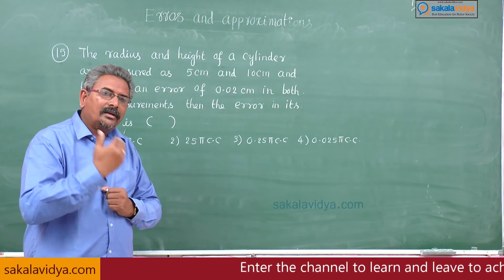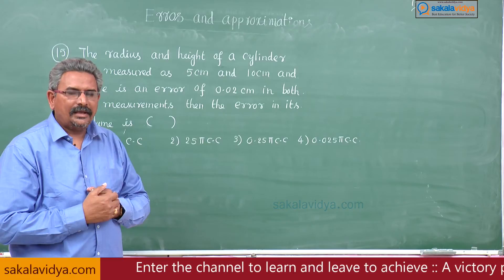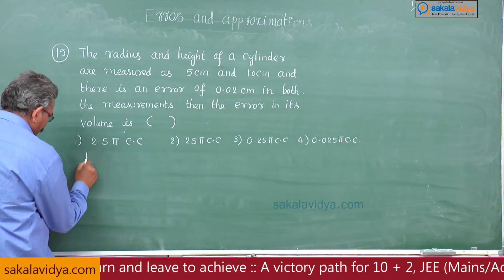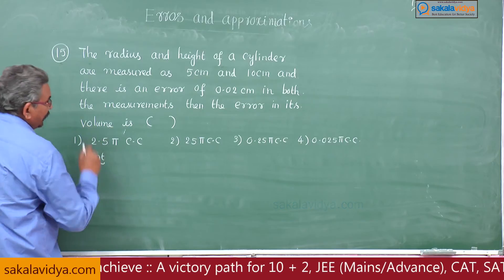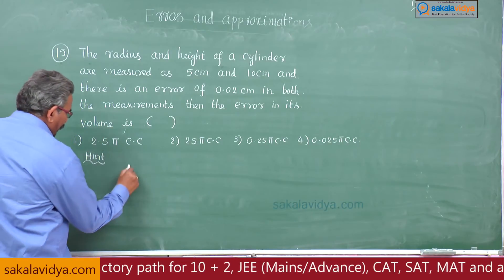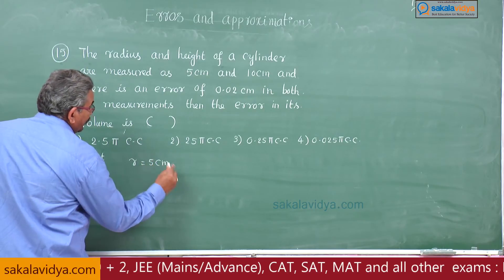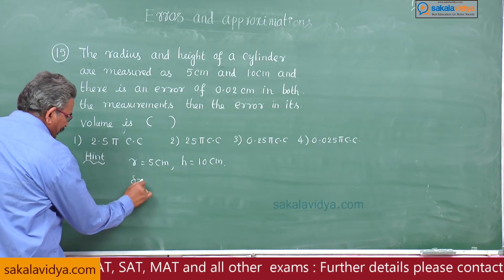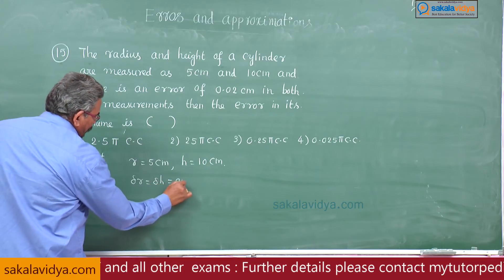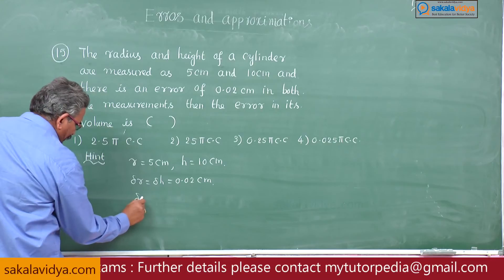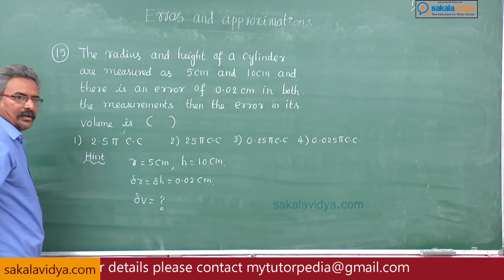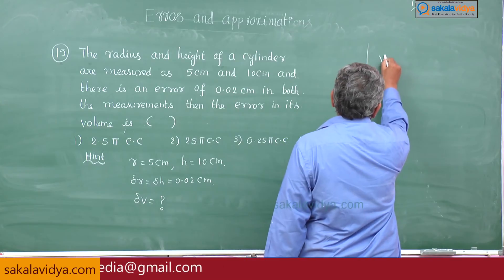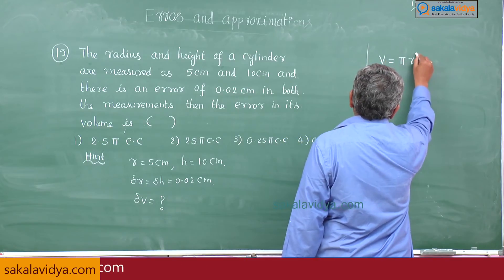The volume of the cylinder is V equals pi r squared h. Given: r equals 5 centimeters, h equals 10 centimeters, delta r equals delta h equals 0.02 centimeters. We are asked to find delta V.